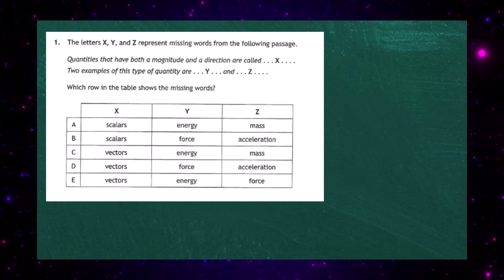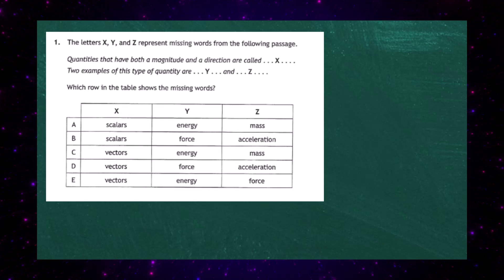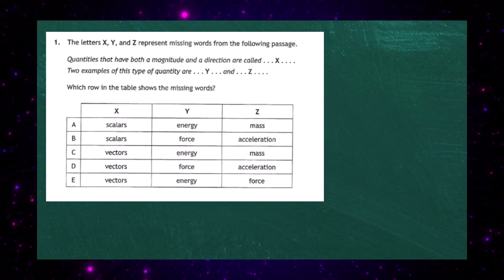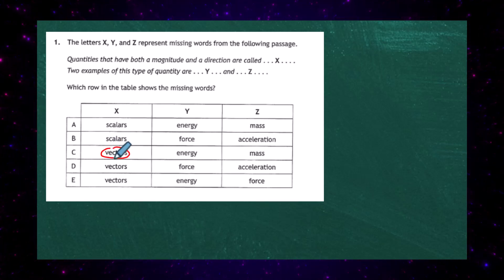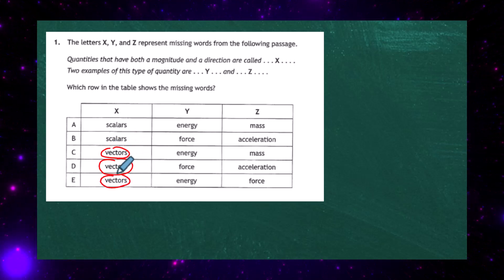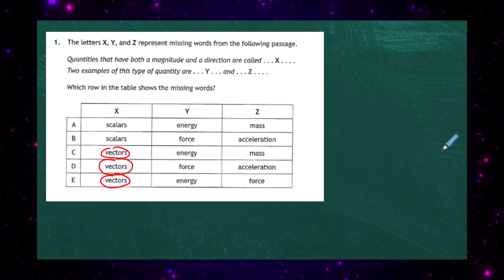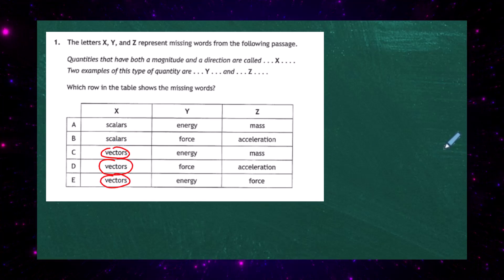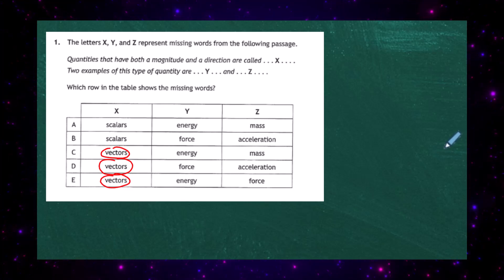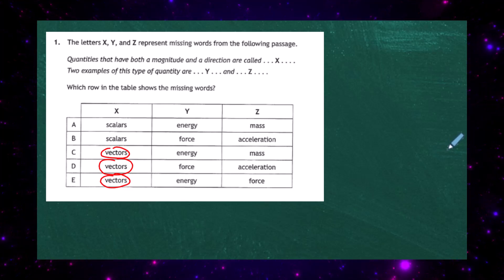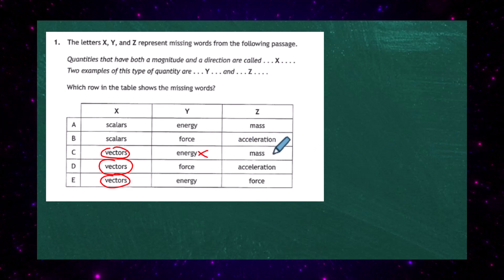Quantities that have both a magnitude and a direction are called vectors, so X is vectors. Now we're looking for two quantities in columns Y and Z that are both vectors. Looking at response C, energy is not a vector.